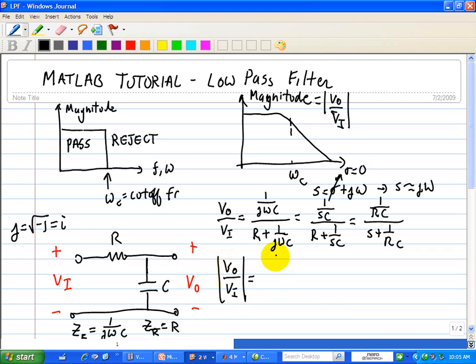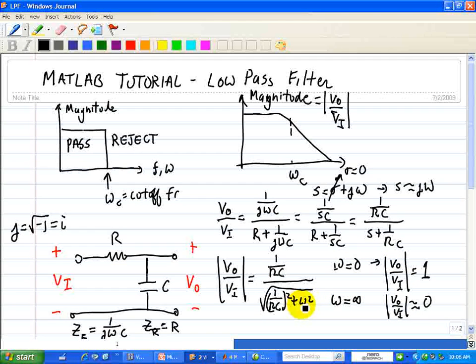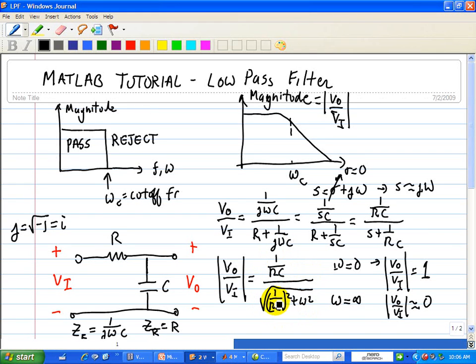And so, basically, this would be 1 over RC is the numerator, and then the denominator, since this is like a complex number right here, j omega plus this, it's 1 over RC squared plus omega squared, or S squared. But what you should see here, when omega is equal to 0, the gain of this, when omega is equal to 0, that implies that the gain VO over VI is approximately equal to 1. And that when omega is equal to infinity, then VO over VI is approximately equal to 0. So, as omega gets larger and larger, this quantity here goes to 0.